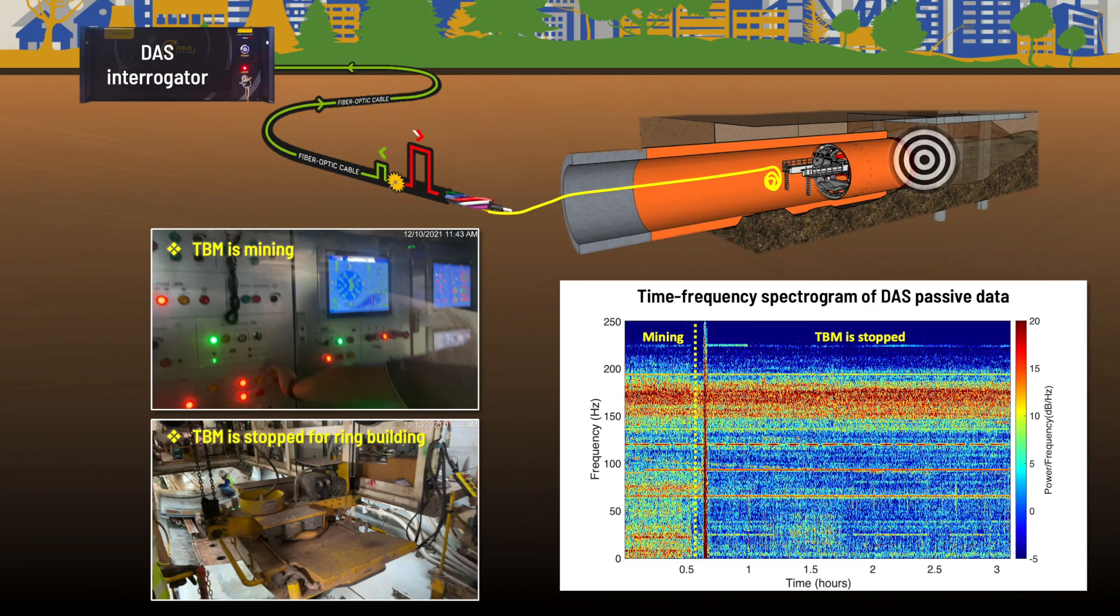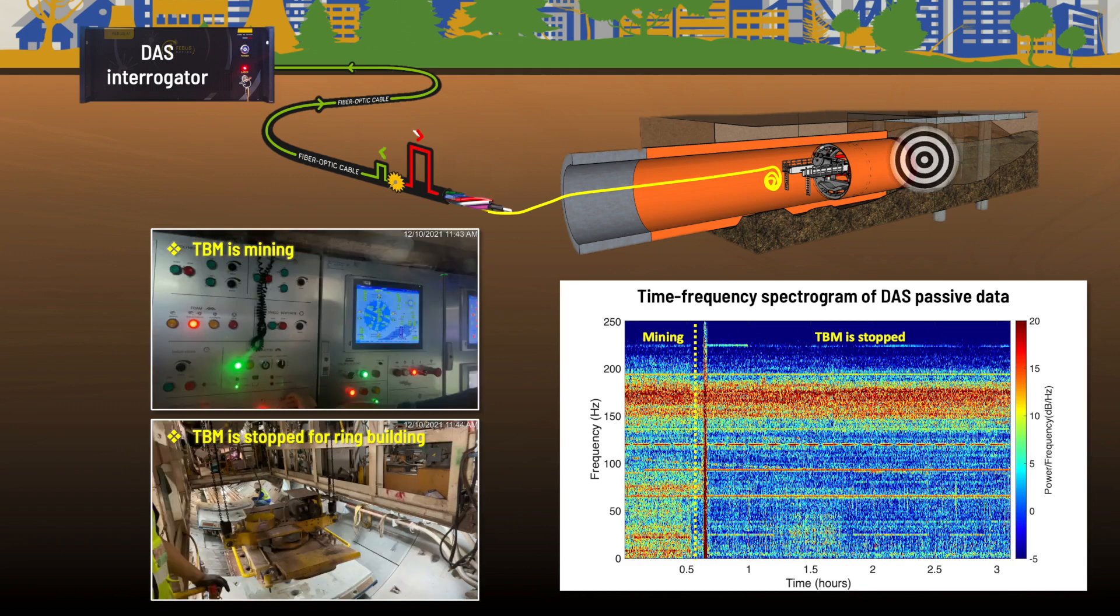The figure shows the time-frequency spectrogram of the average recordings from a 150-meter length fiber. The first half-hour is the mining stage, followed by the ring building stage. Obviously, there is a significant increase in noise energy at the low frequency band between 0 and 100 Hz when TBM is mining. The high frequency energies above 125 Hz show up during both stages, unlike the machinery noise constant throughout the construction.